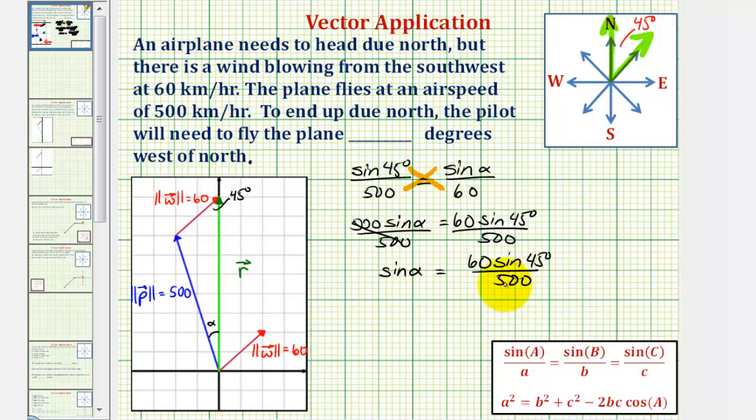So now to solve this for alpha, we would take the inverse sine or arc sine of both sides of the equation, which would give us alpha equals arc sine or inverse sine of this quotient, 60 sine 45 degrees divided by 500.